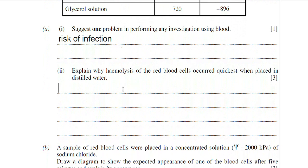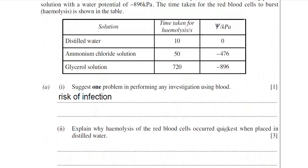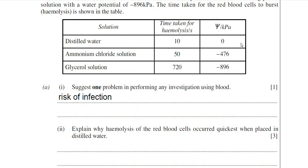Moving on to part two: explain why hemolysis of red blood cells occurred quickest when placed in distilled water. Looking at the table, distilled water is in the first row and it took only 10 seconds for the red blood cells to burst. The ammonium chloride took 50 seconds and the glycerol solution took 720 seconds — so it's extremely rapid bursting in distilled water. We have the water potential values in the table to help explain this.